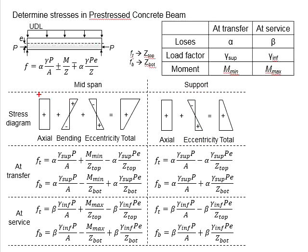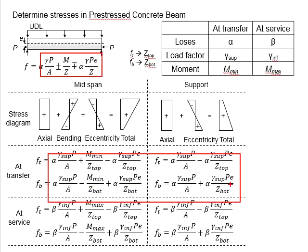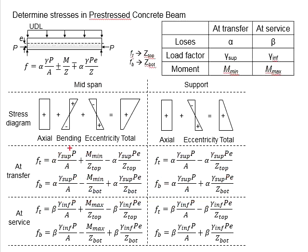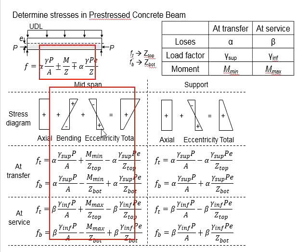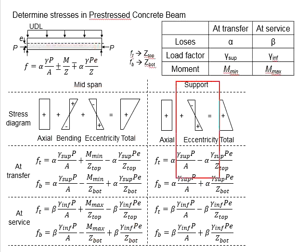With that, based on the stress-flow diagram here, the equations are worked out here. For the mid-span, all three components exist. And for the support, the bending moment component will be ignored. That leaves only the axial and eccentricity.